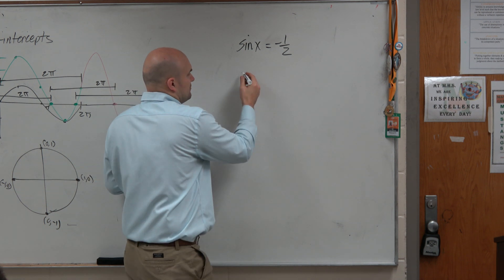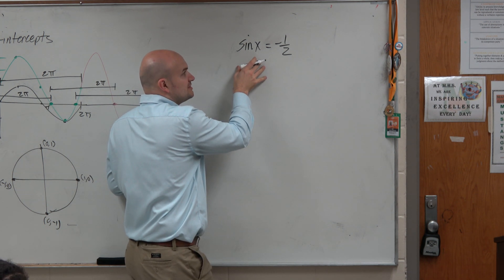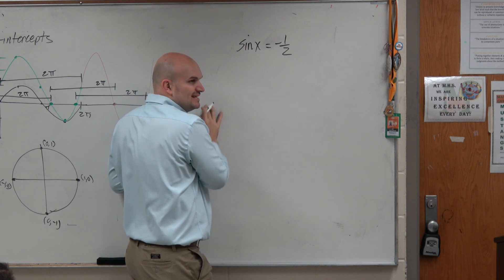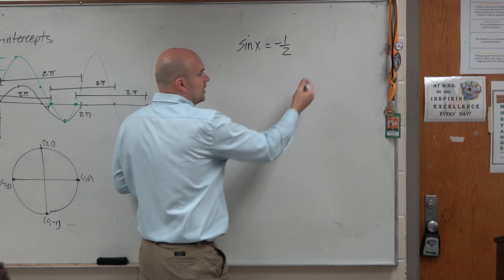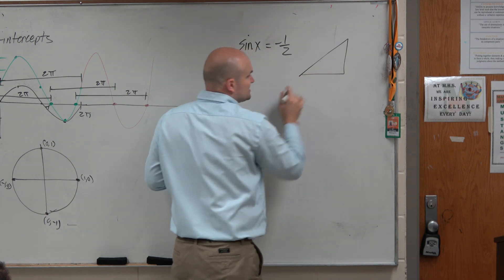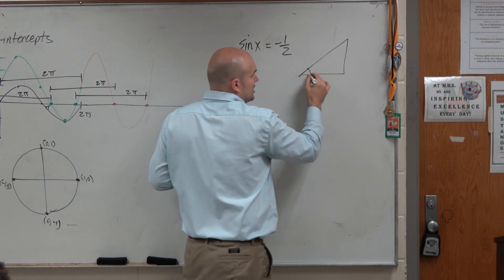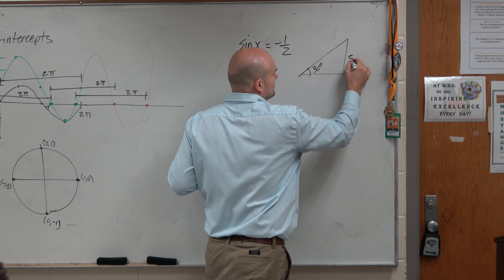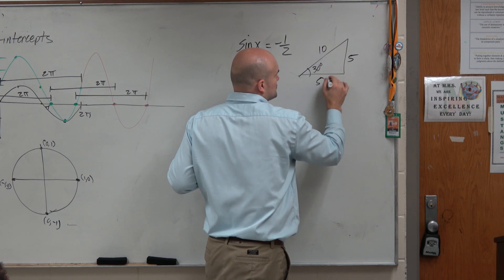So again, I really want to drill this down: what are we taking the sine of? This goes back to our understanding of the sine function from triangles. So let's pretend we had 30 degrees, 5, 10, 5 square root of 3, right?